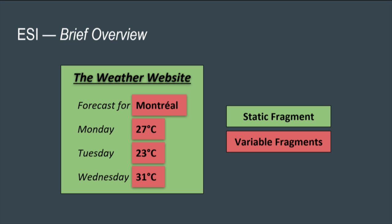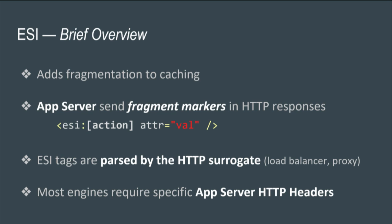ESI is invented to cache dynamic files. For the forecast Monday/Tuesday labels you can keep that as a static fragment, but the actual temperature — say 27 degrees — you can invalidate within the next hour. There has to be a way for the application server to tell the caching server where fragments start and end. This is done through fragment markers in the HTTP response — basically XML tags that get stripped once evaluated by the ESI engine.